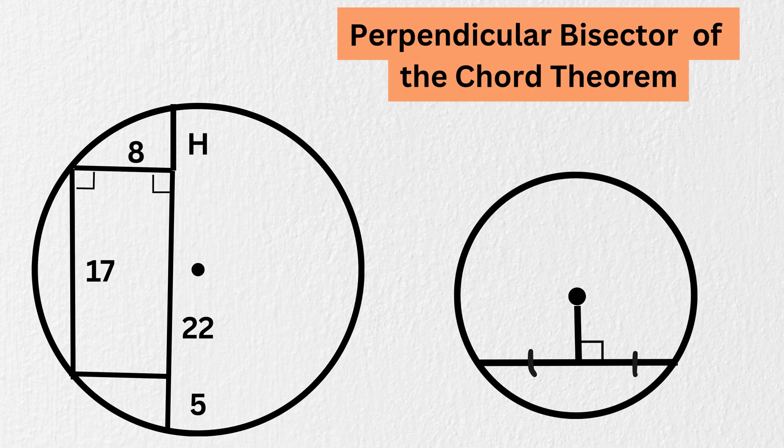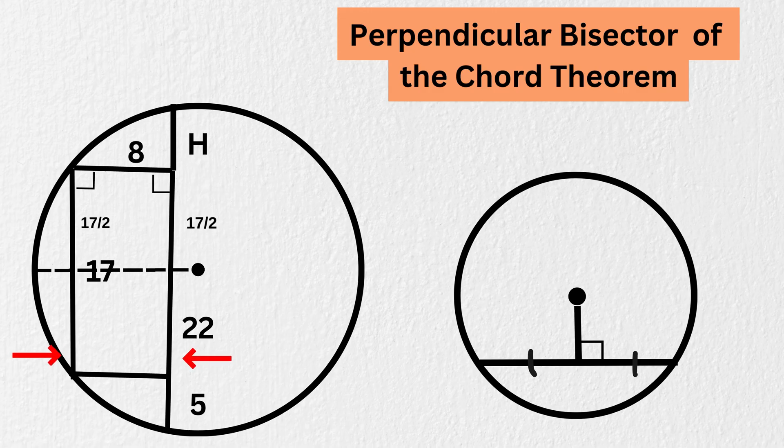So let us draw this perpendicular bisector line from the center of this circle using the above theorem. So both of them will become 17 divided by 2 now. Since these two lines are parallel, and this is a right angle, therefore this length will be equal to this, and thus it will be 17 divided by 2.